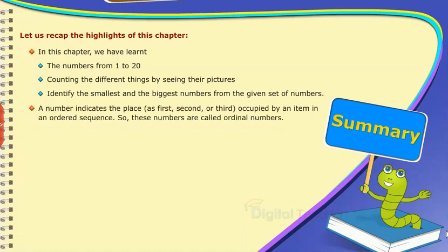A number indicates the place as first, second, or third occupied by an item in an ordered sequence. So these numbers are called ordinal numbers.